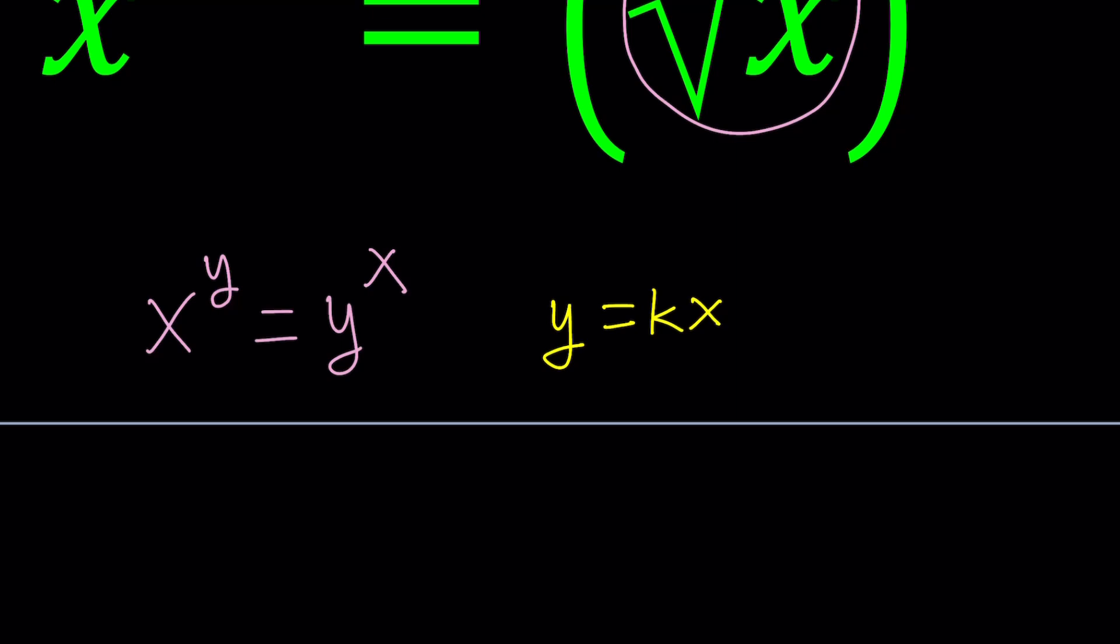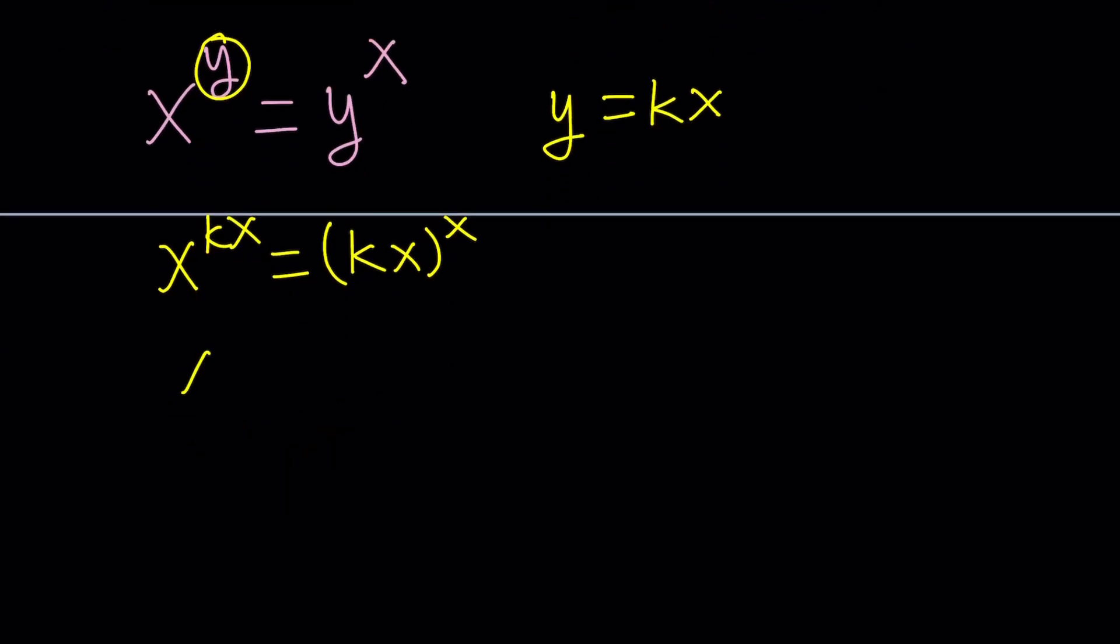And then once we replace y with kx, we get something like x to the power kx equals kx to the power x. And then we can write this as x to the power k to the power x equals kx to the power x. And then raising both sides to the power 1 over x. Of course, in this case, you don't want x to be 0. And if x is equal to 0, you can look at it. Y should also be 0.